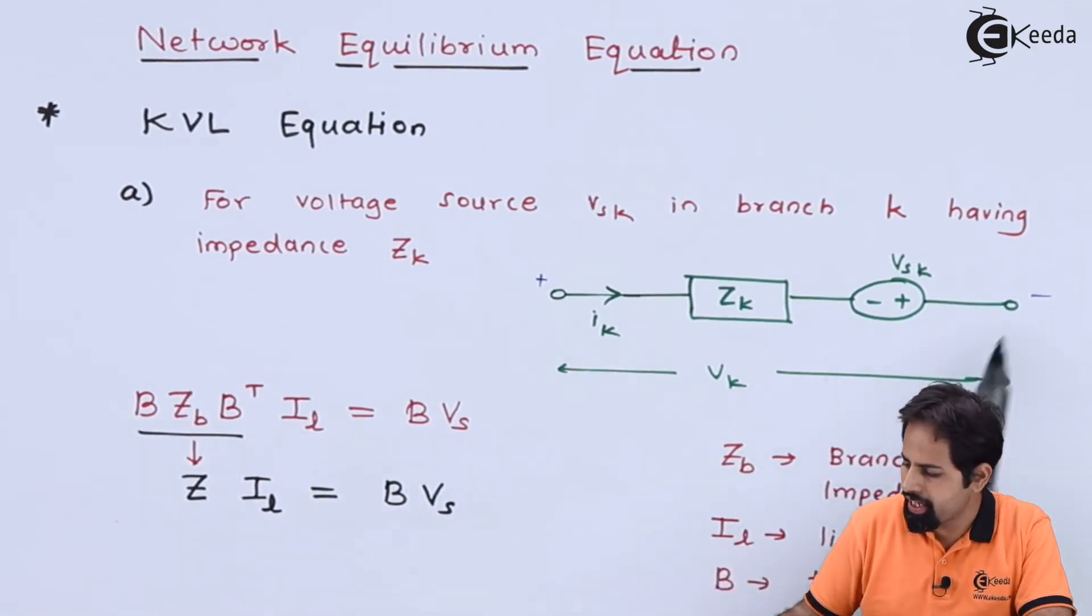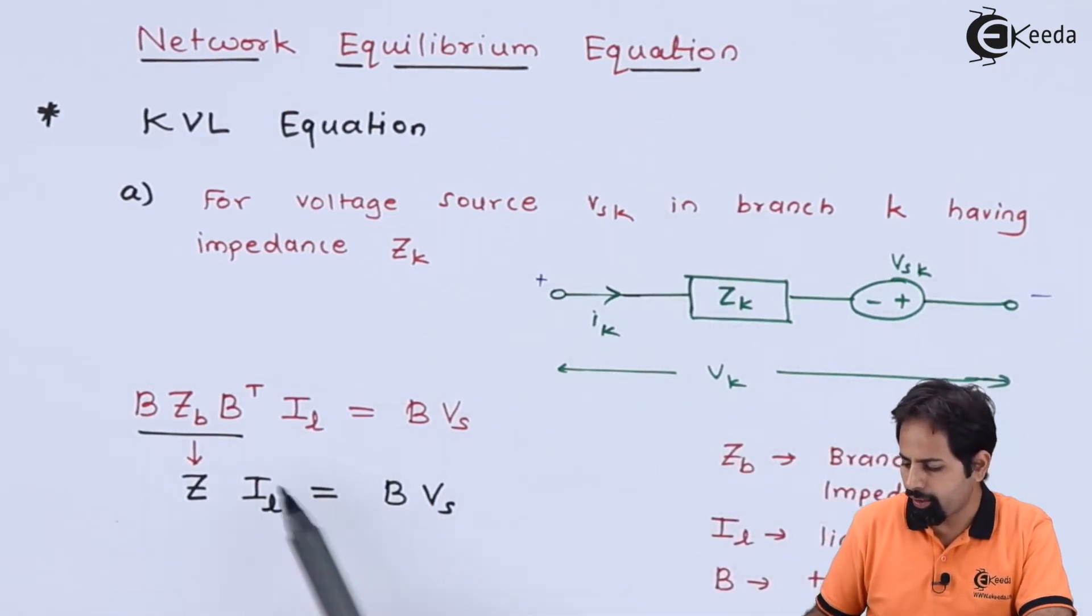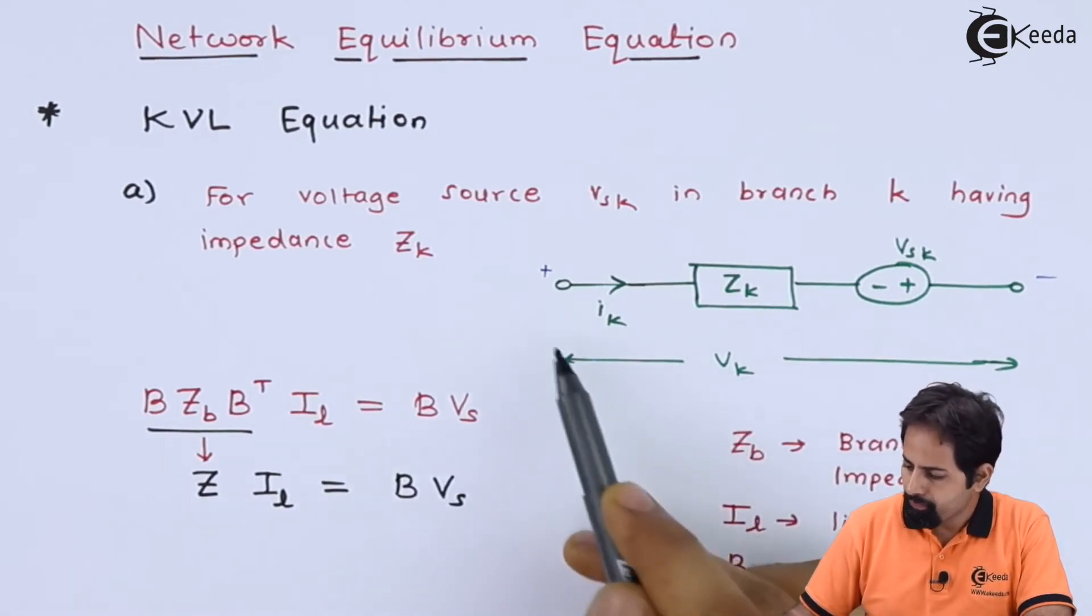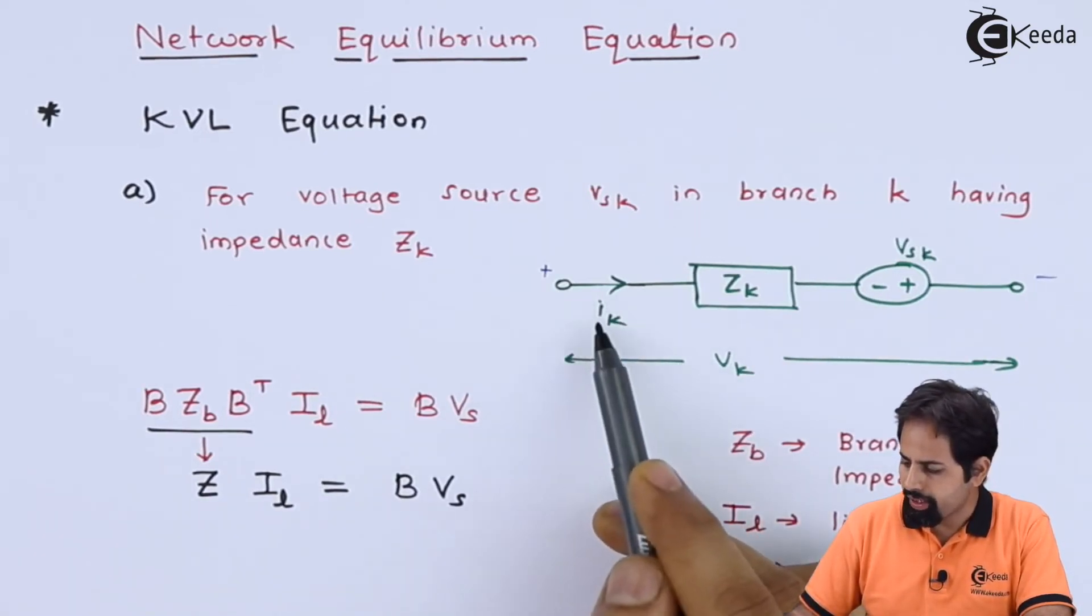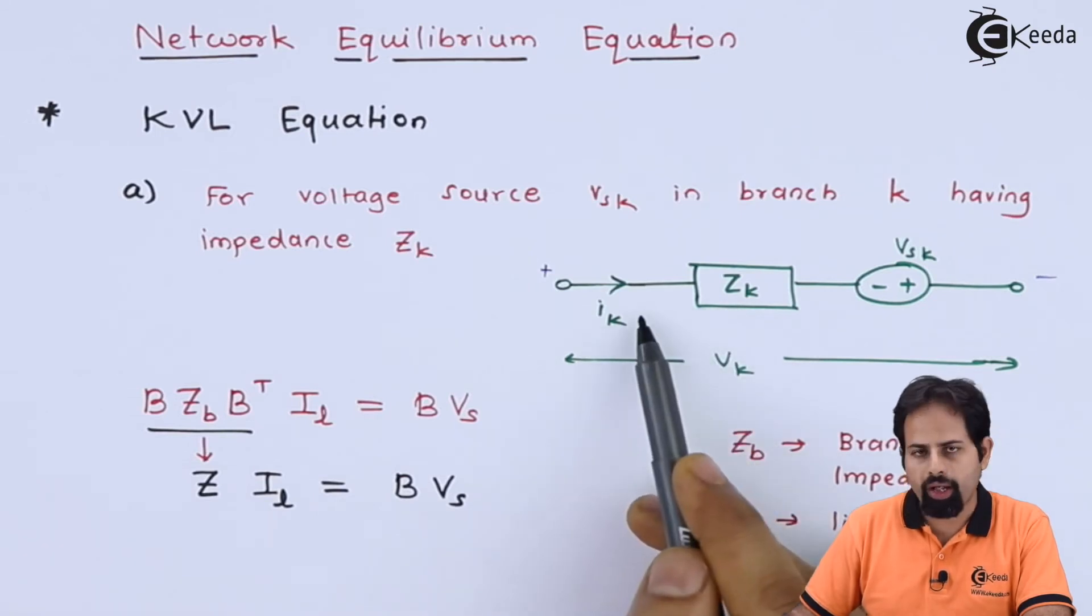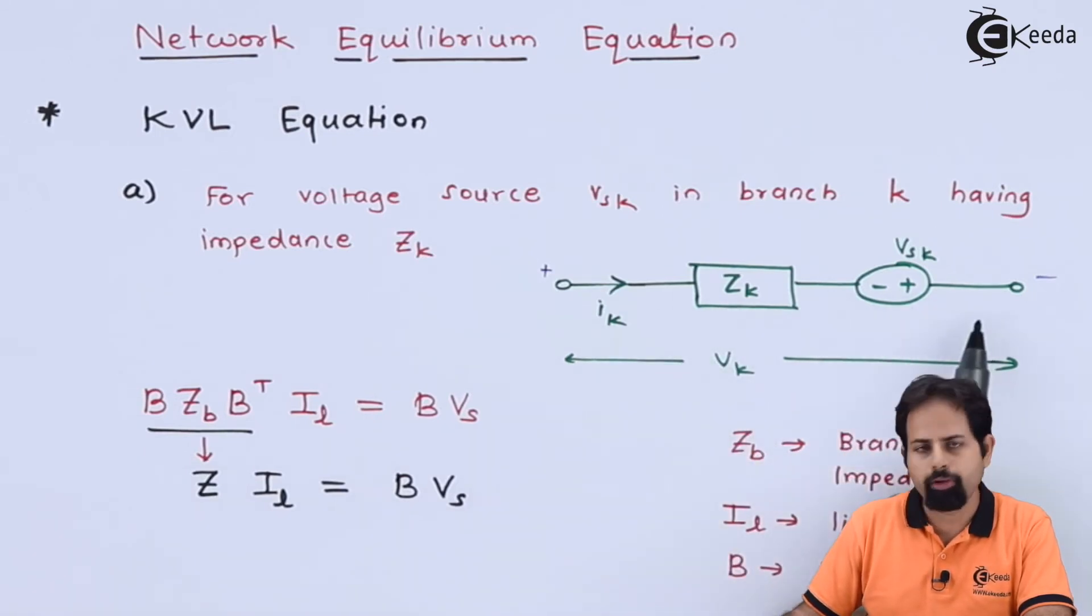So let's first write the KVL equation for this and try to prove this. If I apply KVL we will come to know that VK minus ZK IK plus VSK will be equal to 0.